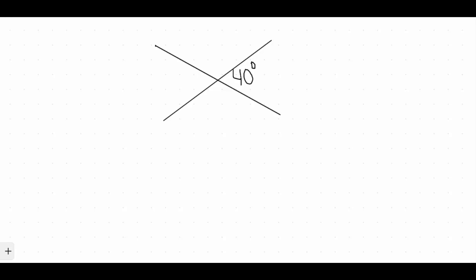So first off, looking at the example that I have here on the screen, we have these two lines that intersect. And when they intersect, they create four spaces, right, one, two, three, four.